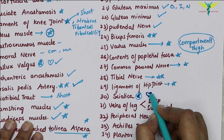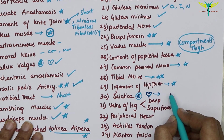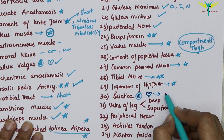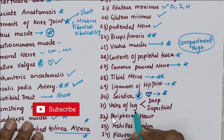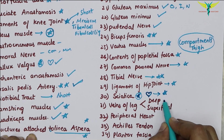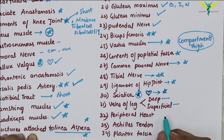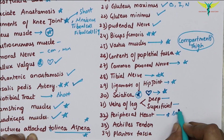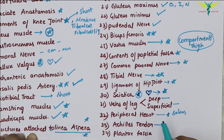Sciatica is a very favorite question of the examiner due to its frequent appearance and clinical importance. The veins of the leg can be asked as two-mark questions — name the deep or superficial veins. They may also ask 'what is the peripheral heart?' — the answer is the soleus muscle, a tricky question to confuse you.